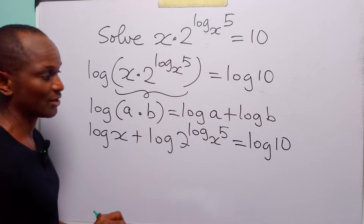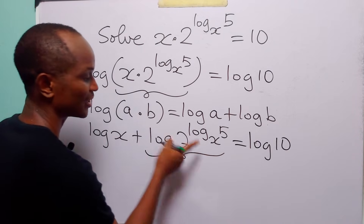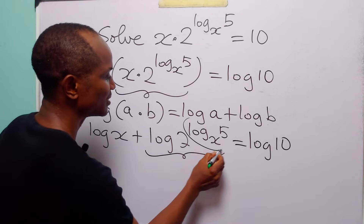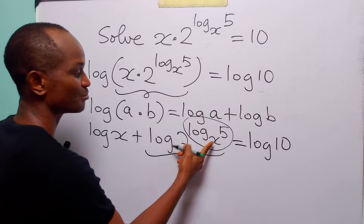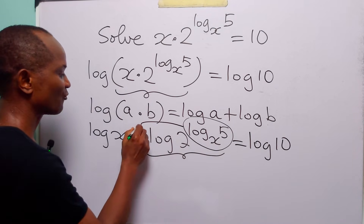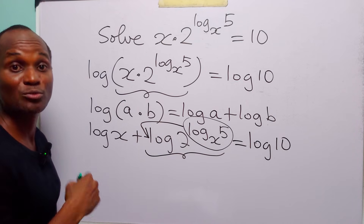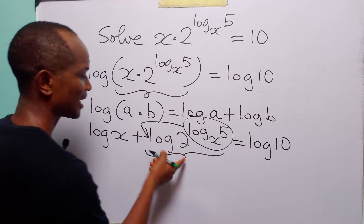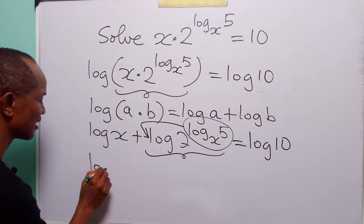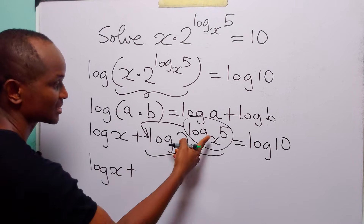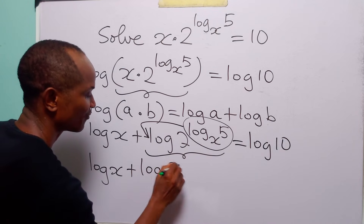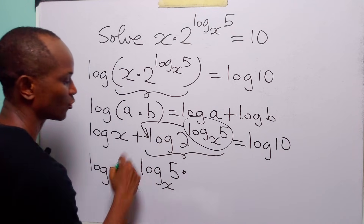Now we are going to apply the power rule of logarithms to this term — the rule that says we can bring down this exponent, that is log base x of 5, the exponent of 2, to the front to become a multiplier. When we apply this rule, on the left-hand side we have log x plus log base x of 5 multiplied by log 2.